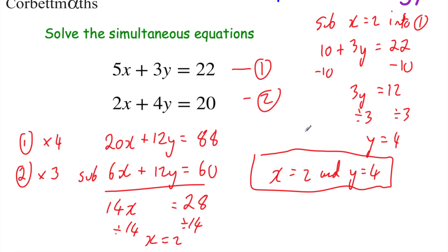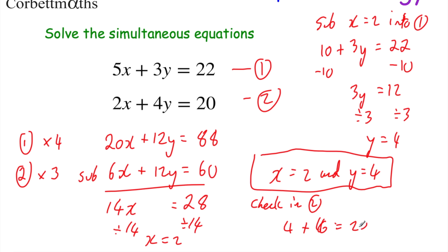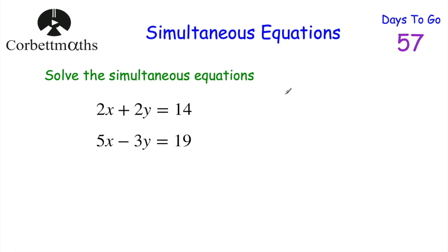Let's check in equation 2. 2 times 2 is 4, plus 4 times 4 is 16, and that should equal 20. 4 + 16 = 20, so 20 = 20 — and that's it. We've solved those simultaneous equations.